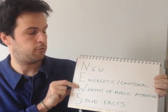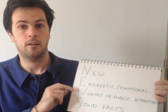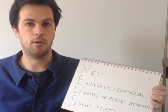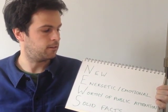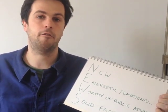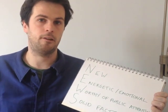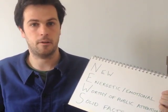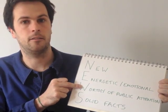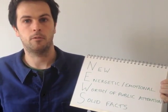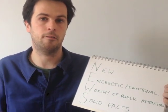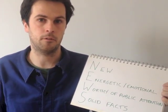The W is for worthy of public attention. This is a really important one because you have to think about what your audience is and why they would be interested. There are many stories which are interesting to your family, friends or colleagues — people in your close circles. But what you have to really think about is why would other people want to read about that? Is it an issue that is important to them, or how can you relate your story to make it important to them?